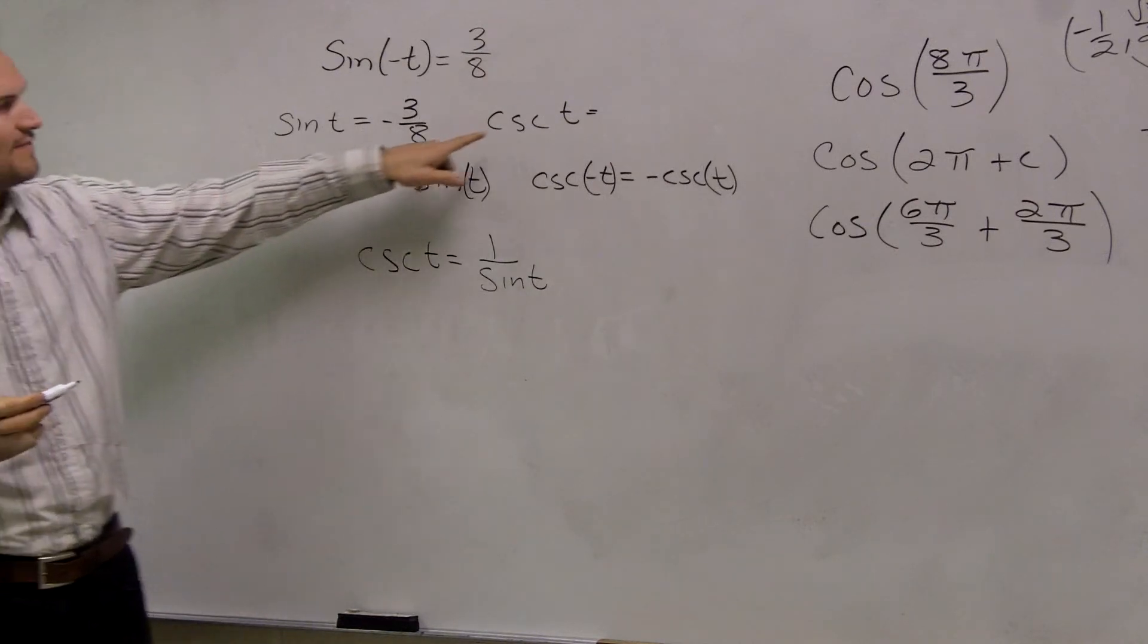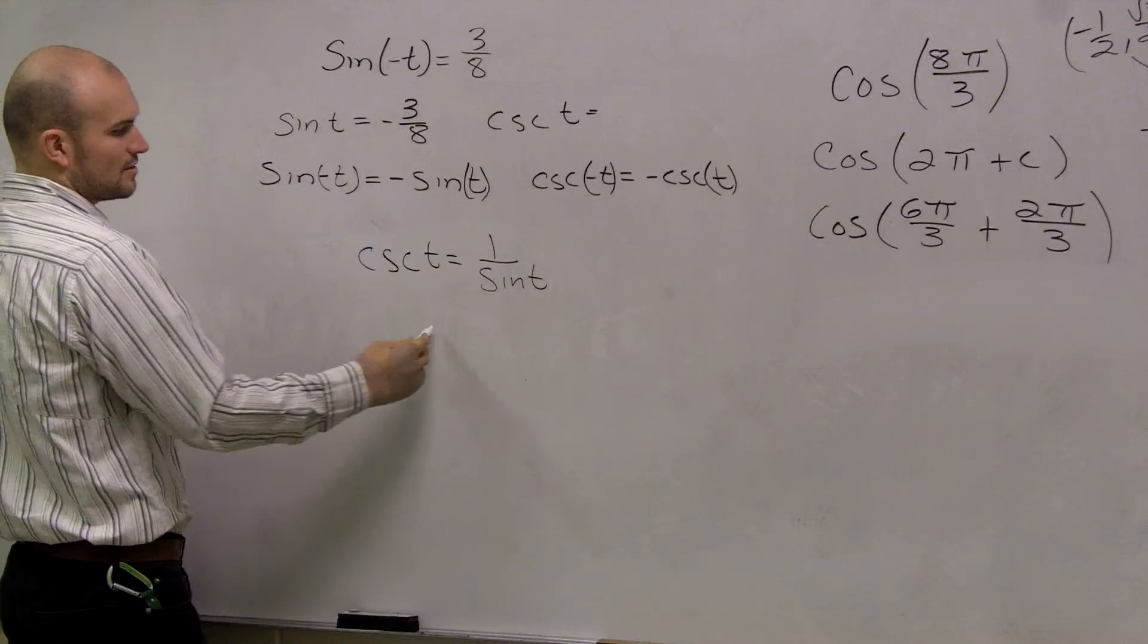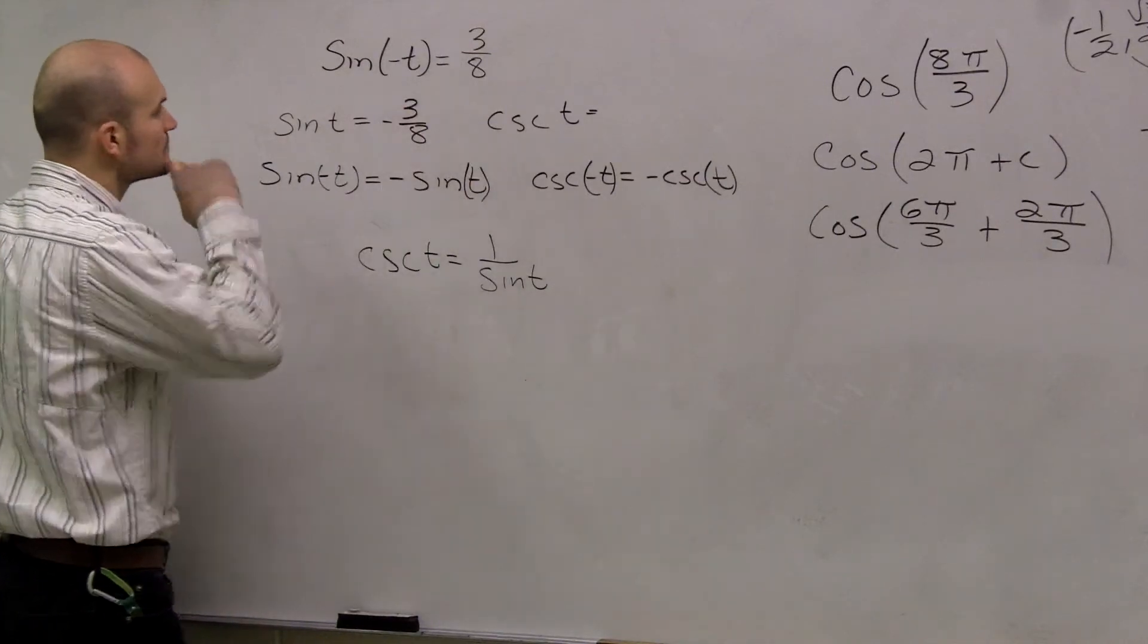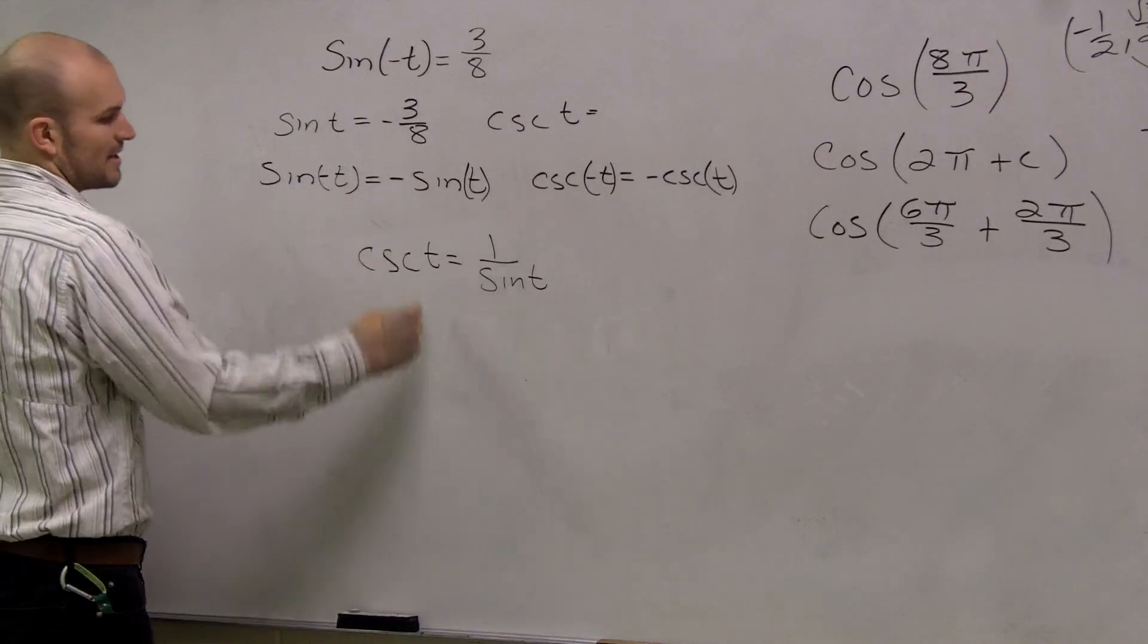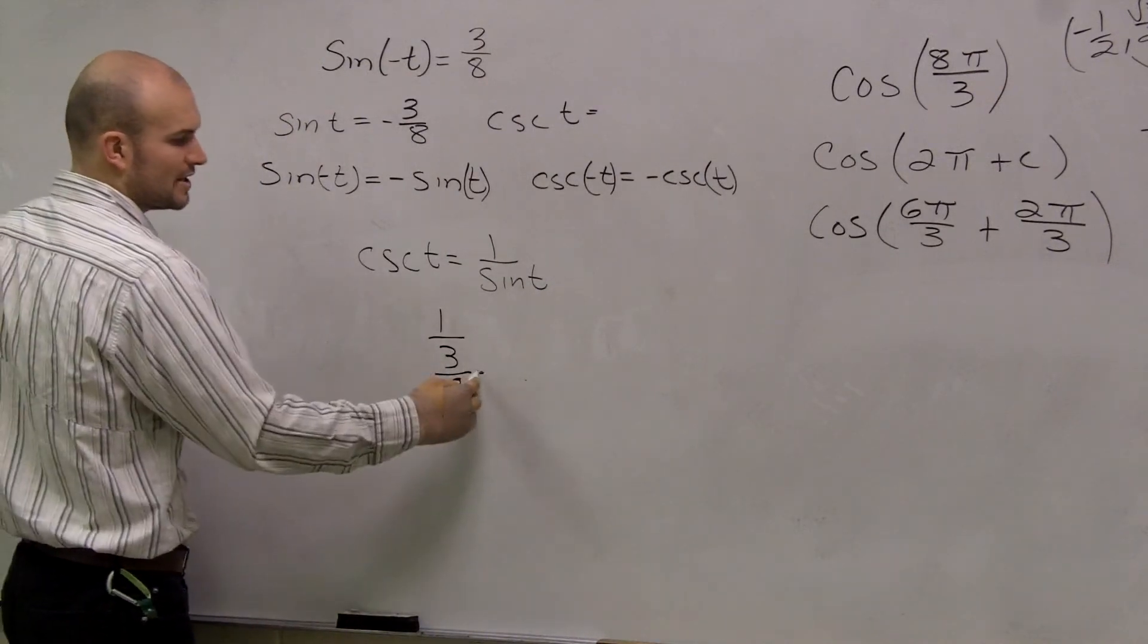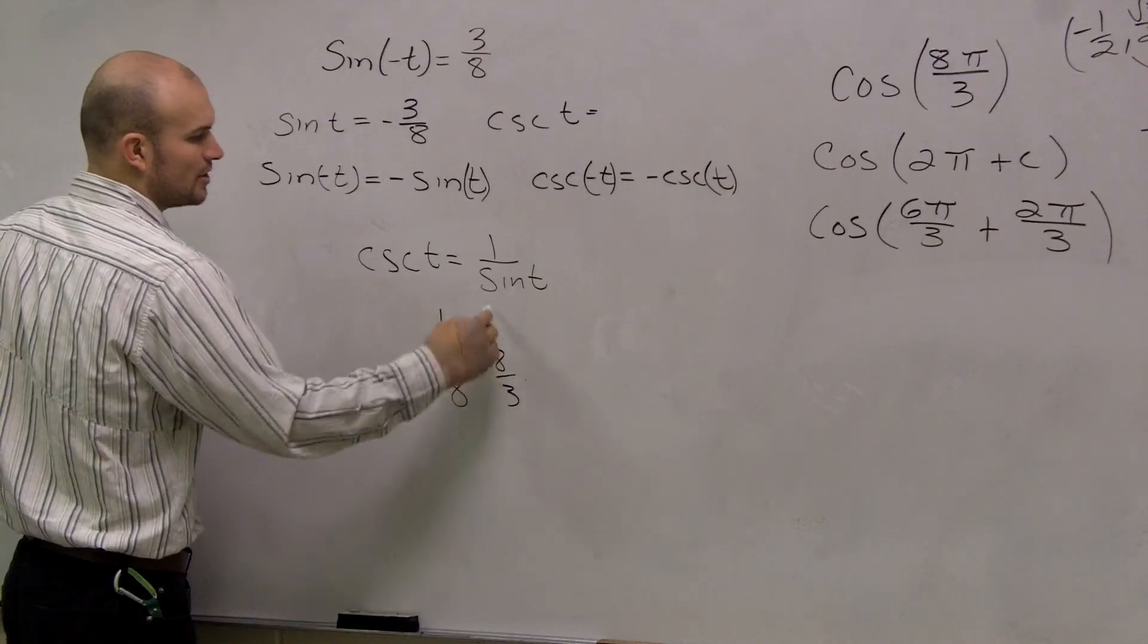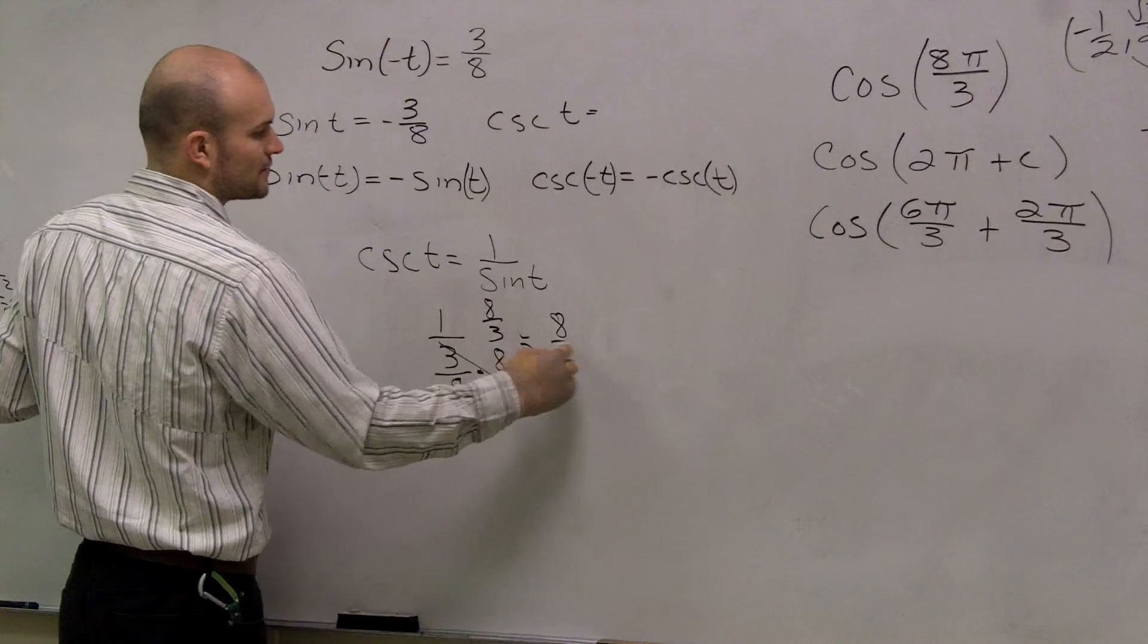So therefore, if I'm looking for the cosecant, I'm going to have 1 over 3/8ths. Well, I'm going to have to multiply by my reciprocal, and what I'll have is that cancels to 1. I'm left with 8/3rds.